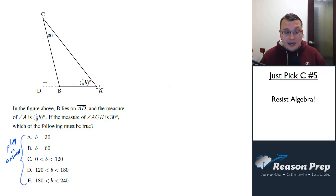We're gonna test the answer choices based on the parameters of the problem and see which choice must be true. We're told B lies on AD, the measure of angle A is one half B, and the measure of angle ACB is 30. Which of the following must be true? This is gonna be important in a second - we're looking for what must be true, not what could be true, but what always has to be the case.